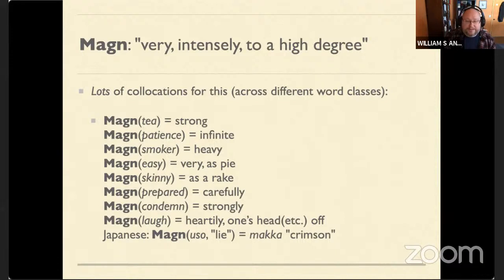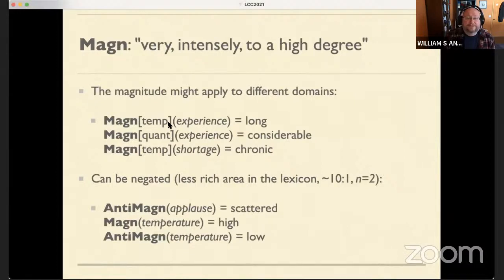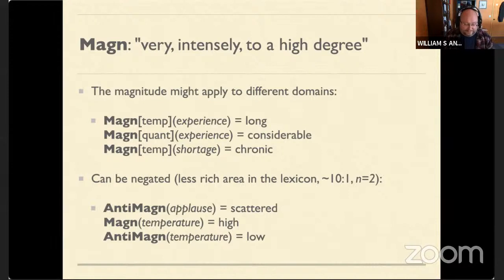A really big lie in Japanese is 'makka' — crimson. The Magn function's magnitude can apply to different domains. Intense experience in the temporal domain is 'long'; in quantity it's 'considerable'; a shortage can be 'chronic.' Lexical functions can also be modified — 'anti' turns something into the opposite. So the anti-intensity of applause is 'scattered'; intensify temperature high gives 'boiling,' while anti-intensify temperature gives 'low.'